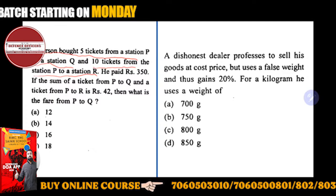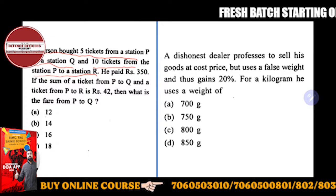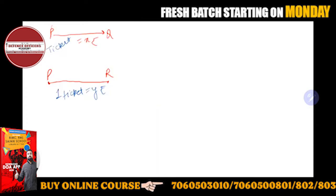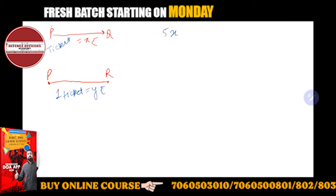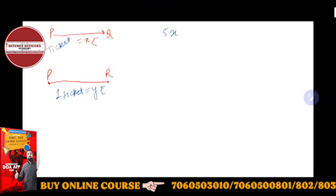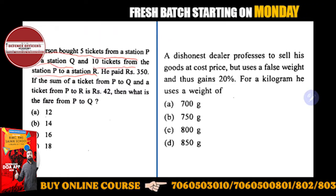Now, 5 tickets from station P to Q and 10 tickets from P to R. Five tickets means 5X, plus - for P to R, he took 10 tickets from P to R station, so 10 tickets. One ticket is Y rupees, so that's 10Y.